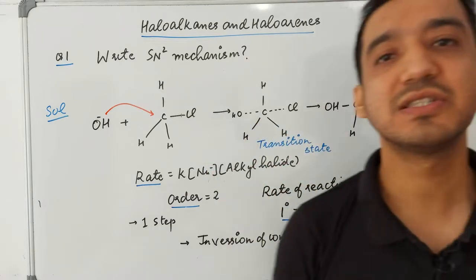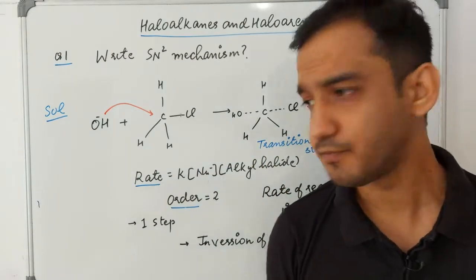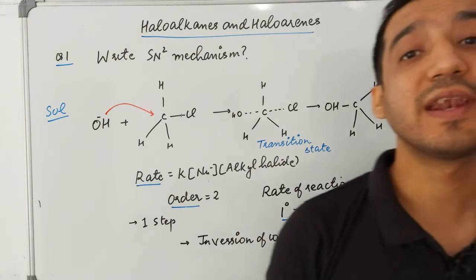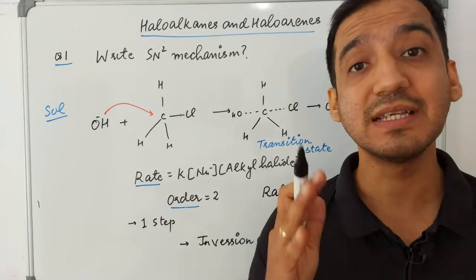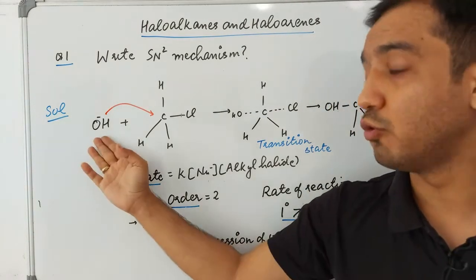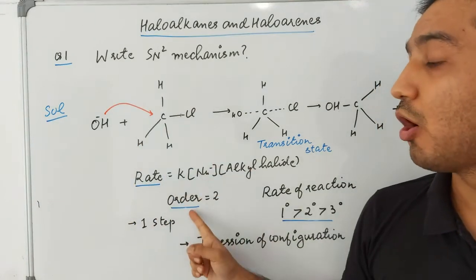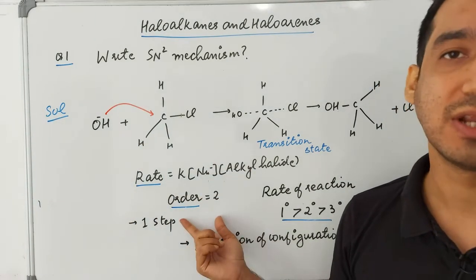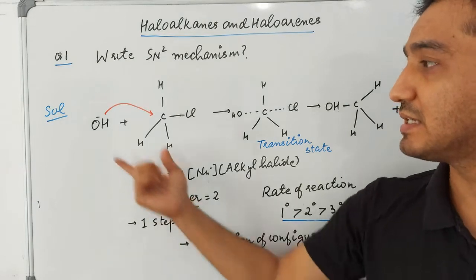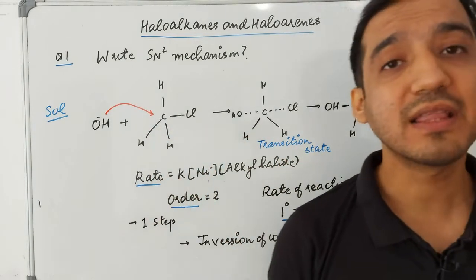The nucleophile which is removed — which is chlorine — is called the leaving group. The rate of this reaction depends upon the concentration of both the nucleophile as well as the alkyl halide, so the order of the reaction is two. This reaction happens in one step.